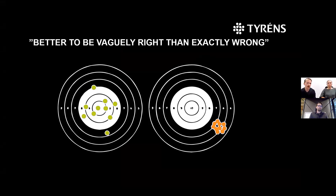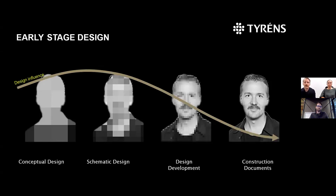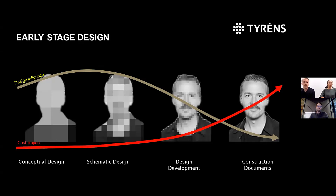We are currently 15 design ambassadors in the network, and we are six design mentors that support the ambassadors. We believe that this work gives us the confidence to work with the uncertainties that are part of early design phases, and we think that in early design it's better to be vaguely right than exactly wrong. We know from experience that we as structural designers need to strengthen our role in early design phases, because that's where we have the most impact and the cost impact is the lowest on the project.